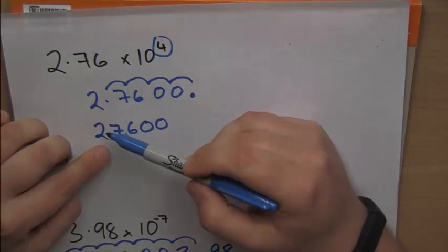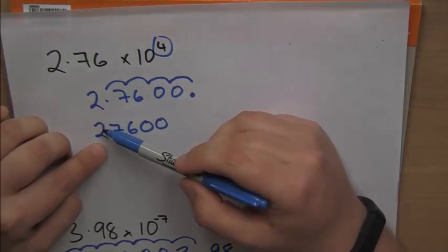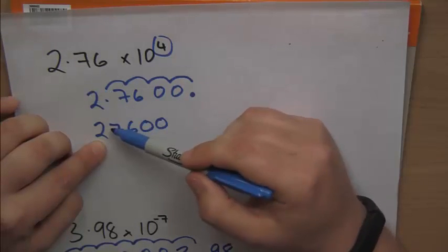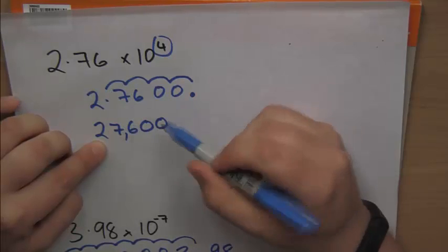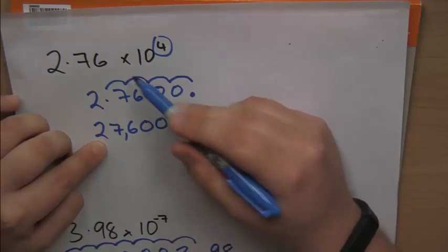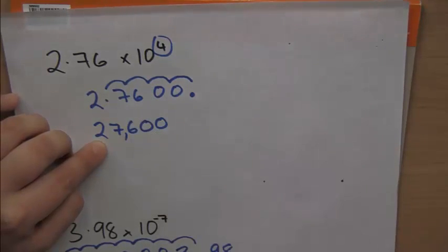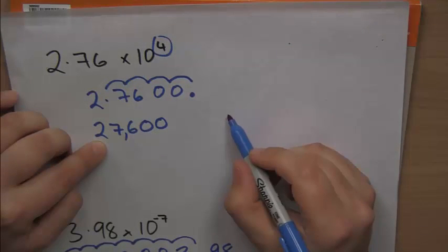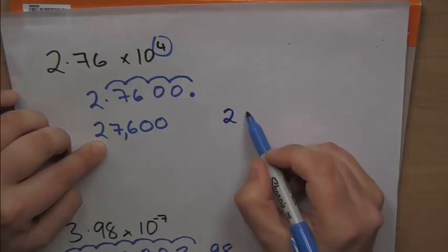Now, the easiest way to remember this is where does the decimal point go in? Well, it's 4 numbers behind the 2. So we go 1, 2, 3, 4, it's going there. So we need a couple of 0's in after that 7, 6. Let's just show you that, just to make sure it's clear.